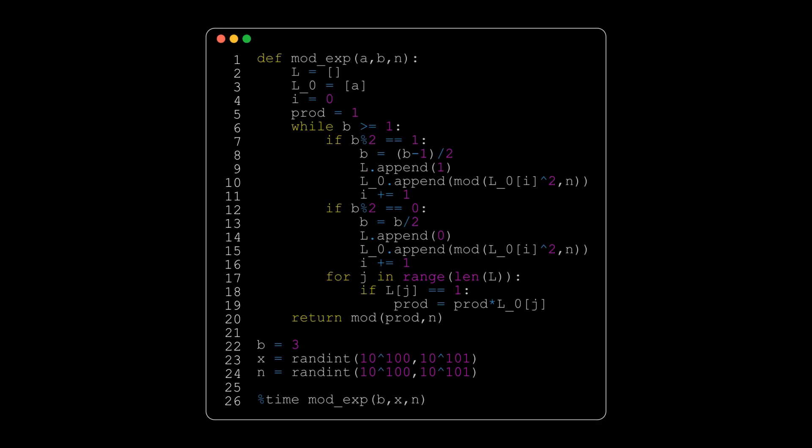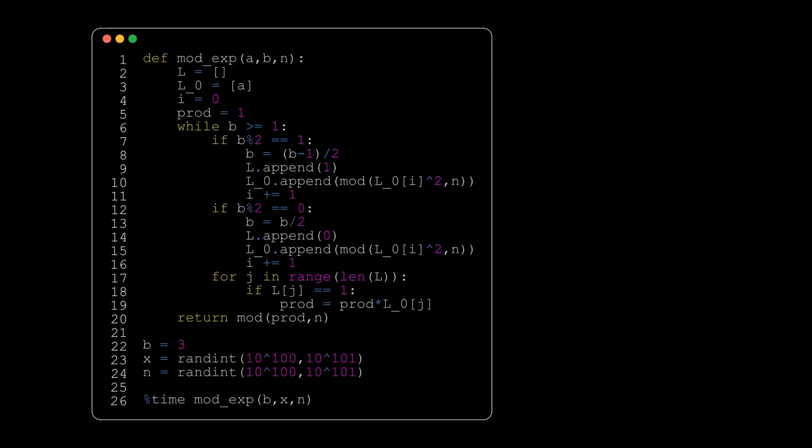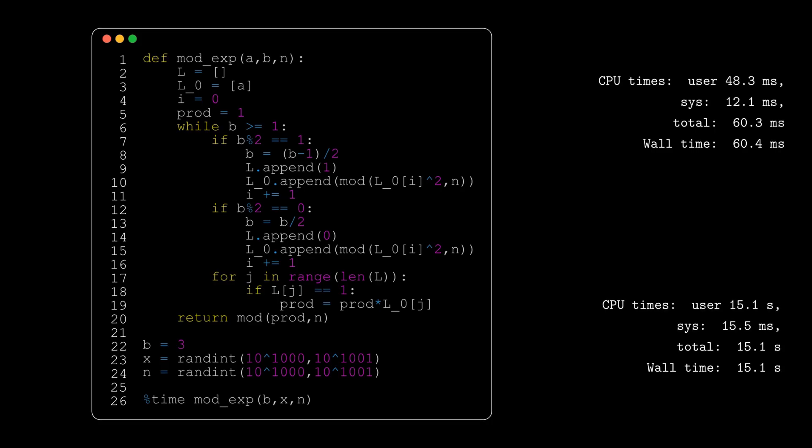Here's some crude code I wrote in SageMath, a coding program for math-related stuff, that does this fast modular exponentiation algorithm. At the bottom, I set our base to 3, and we choose a random 100-digit exponent and a random 100-digit modulus. We're gonna run this on my old laptop and see how fast it goes. So, about 60 milliseconds, pretty fast. But you can probably spend more time into setting up a key, so what if the exponent was 1000 digits long? Well, it took me about 15 seconds, a very reasonable amount of time to spend, and a huge exponent.